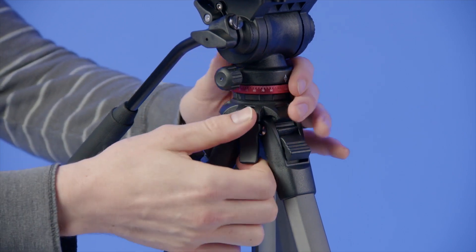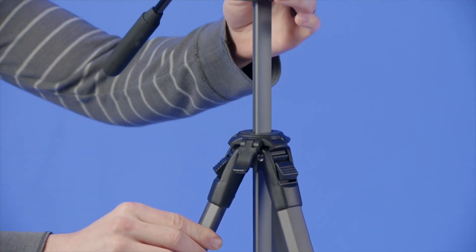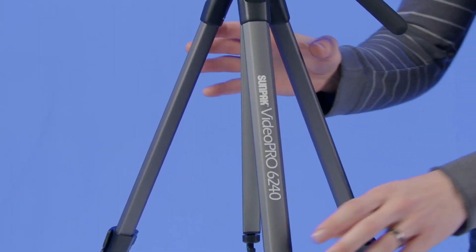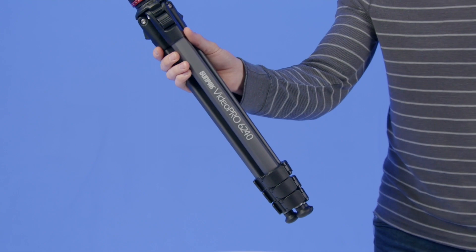With its lift and lock center column, it allows easy rise and fall of the head for precise height adjustments. The special triangle-shaped center column allows the legs to be folded compactly, so that the tripod can be easily gripped with one hand.